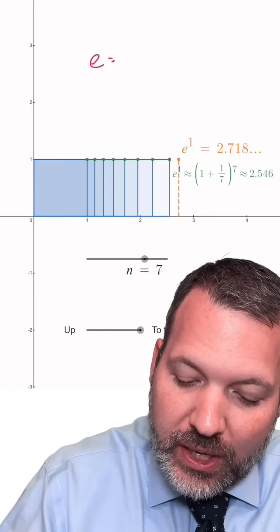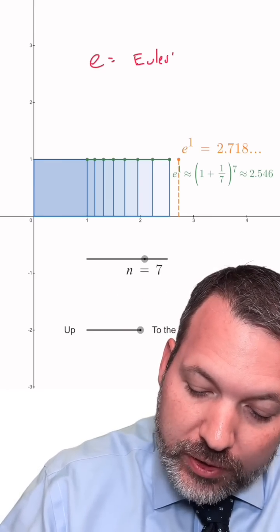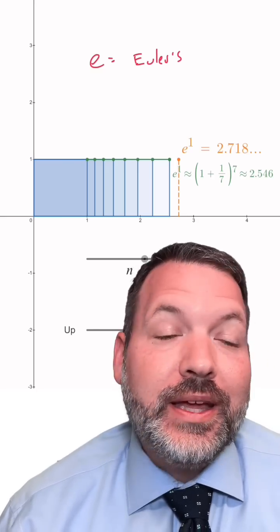That number is very special, and so we give it the name E, and it's also sometimes called Euler's number, though it's not E for Euler, it's E for exponential.